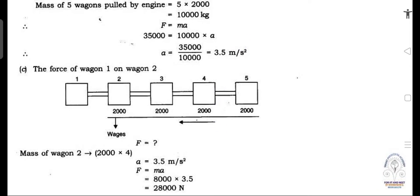The force of wagon 1 on wagon 2: behind wagon 1 there are 4 wagons. Mass of wagons 2 to 5 = 2,000 × 4 = 8,000 kg. Using F = M × A = 8,000 × 3.5 = 28,000 N.